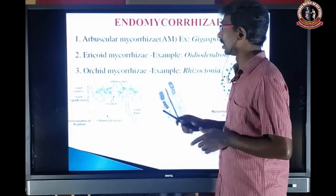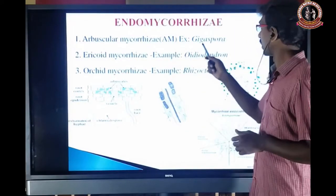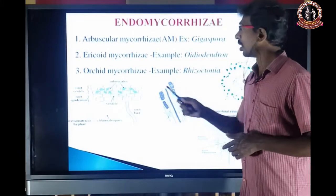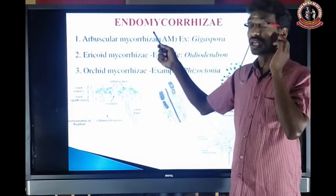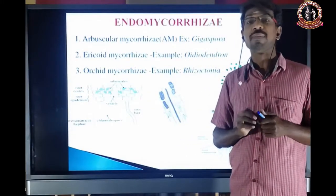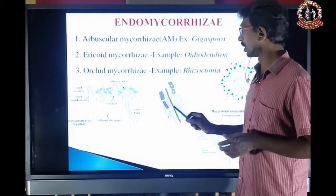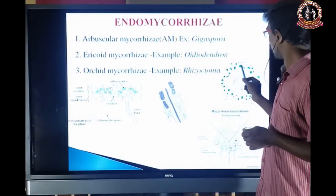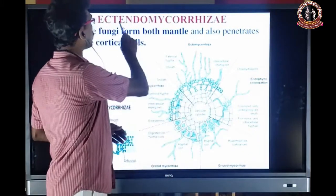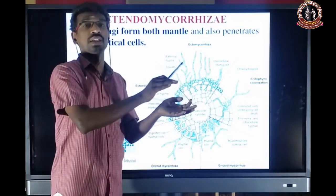There are different types of endomycorrhizal present in different groups of plants. Orchid mycorrhizal is present only in the Orchidaceae family. Other types include arbuscular mycorrhizal, ericoid mycorrhizal, and orchid mycorrhizal.